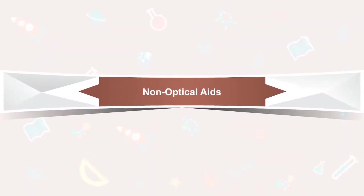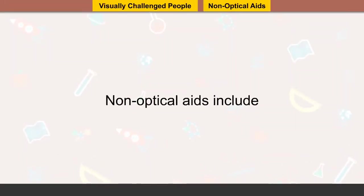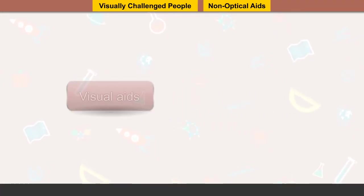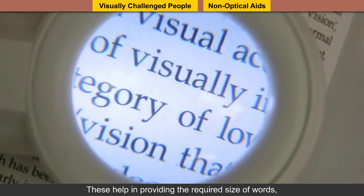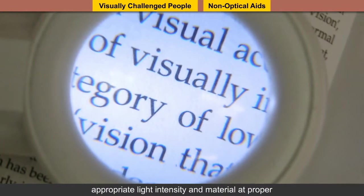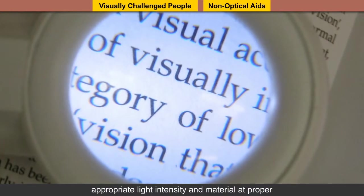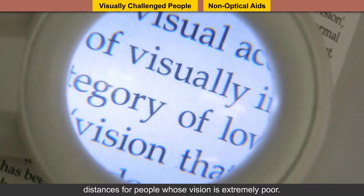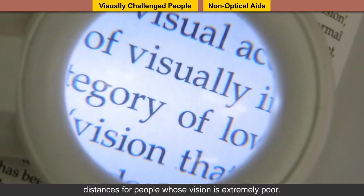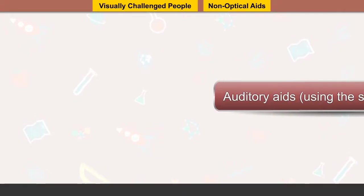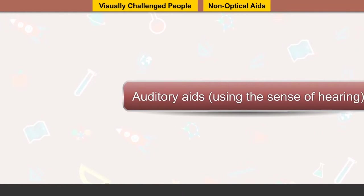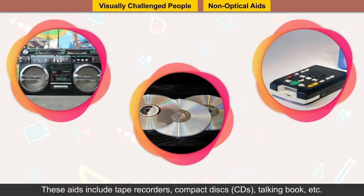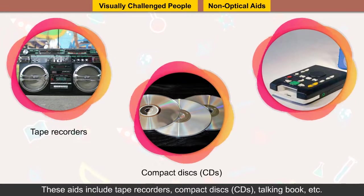Non-optical aids include visual aids, which help provide the required size of words, appropriate light intensity, and material at proper distances for people whose vision is extremely poor. Auditory aids use the sense of hearing and include tape recorders, compact discs or CDs, and talking books.